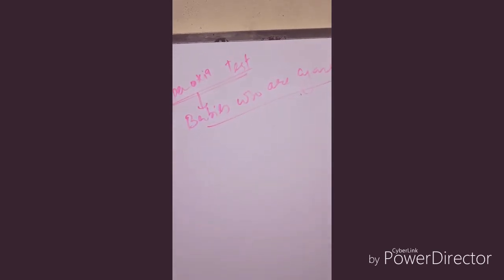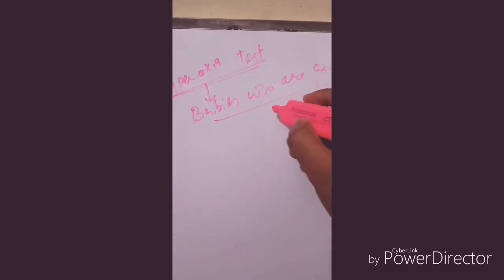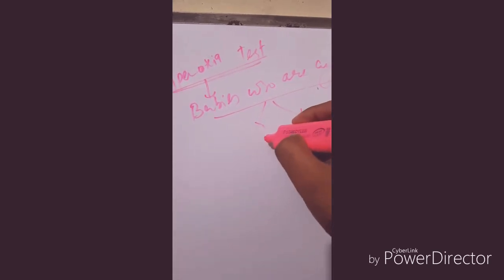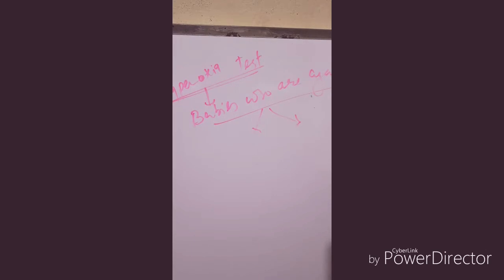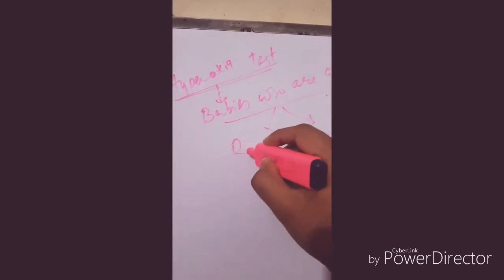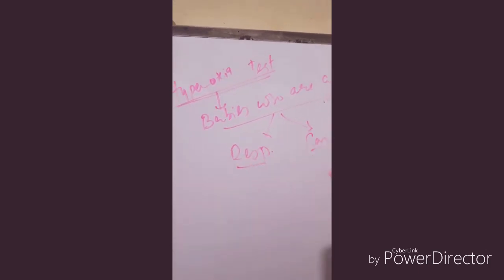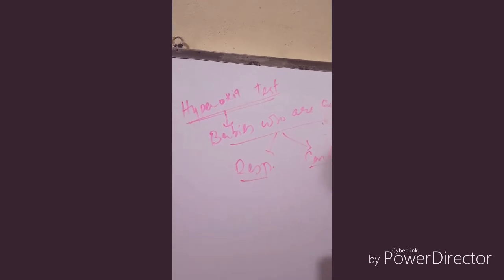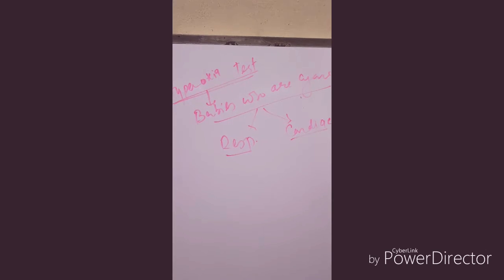Mainly there are two systems involved in cyanosis: one is respiratory, the other is cardiac. In summary, this test helps to differentiate the cause of cyanosis, whether it's respiratory or cardiac.